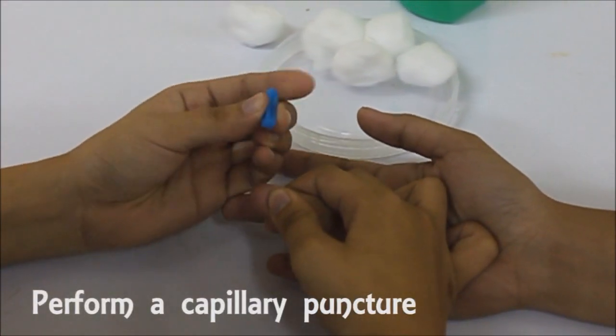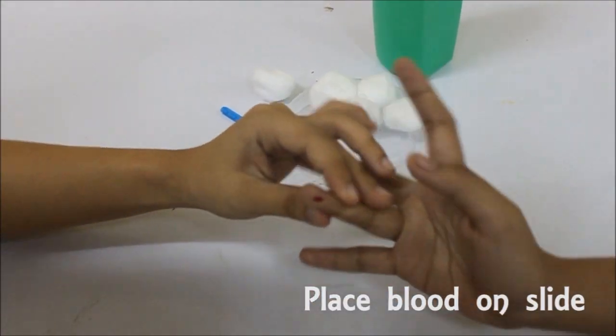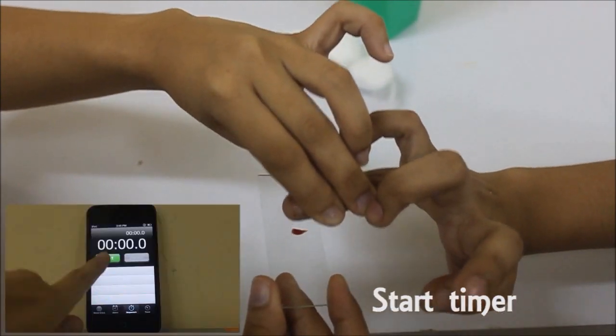First, do a capillary puncture. Place a drop of blood at the center of a clean slide and start the timer.